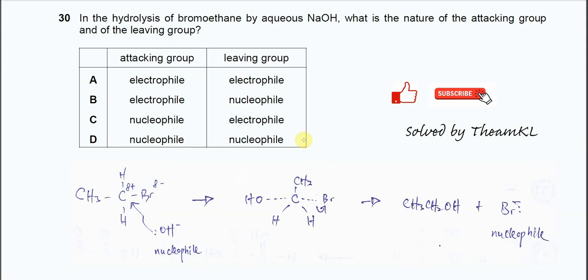Question 30. In the hydrolysis of bromoethane by aqueous sodium hydroxide, what is the nature of the attacking group and the leaving group?